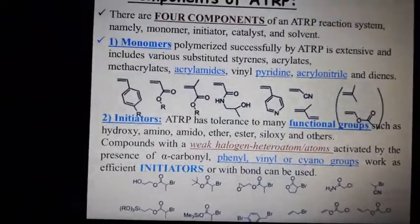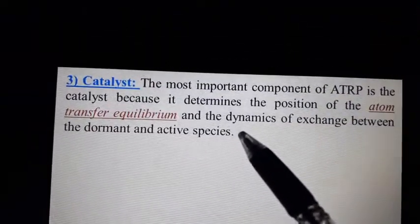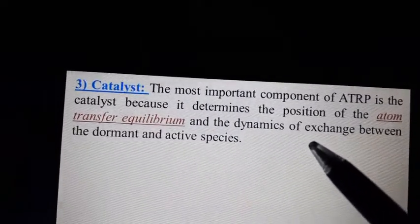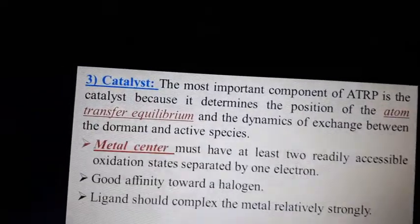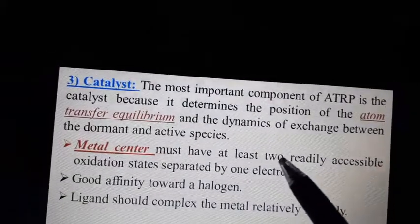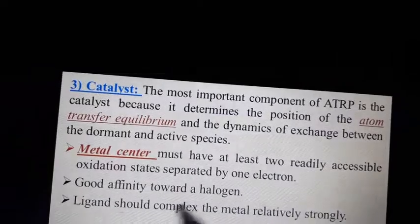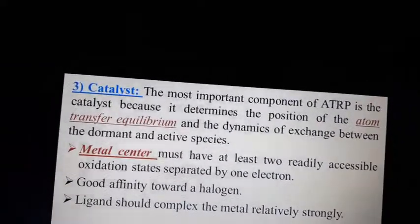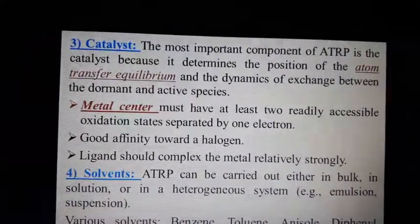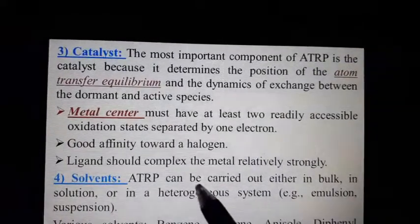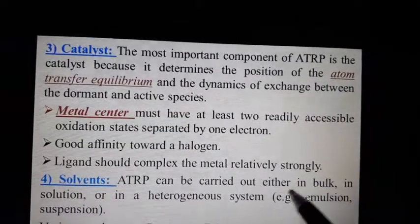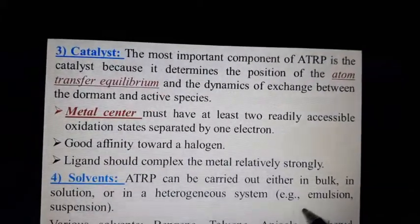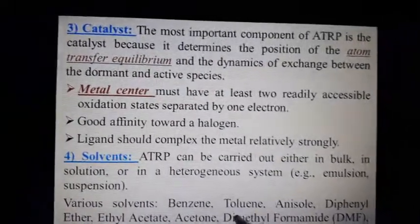Another important component in ATRP is the catalyst, which is the most critical because it determines the position of the equilibrium and the dynamic exchange between dormant and active species. The metal should have at least two readily accessible oxidation states separated by one electron, good affinity toward a halogen, and the ligand should form a strong complex with the transition metal catalyst. Polymerization can be carried out in bulk, in homogeneous solution, or in emulsion or suspension.